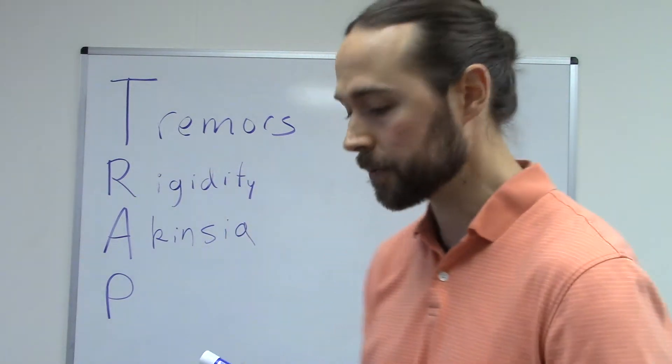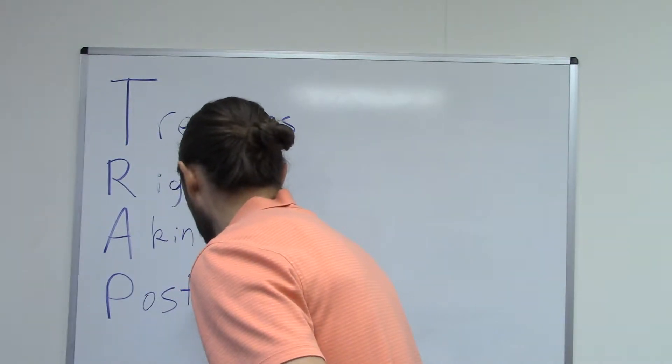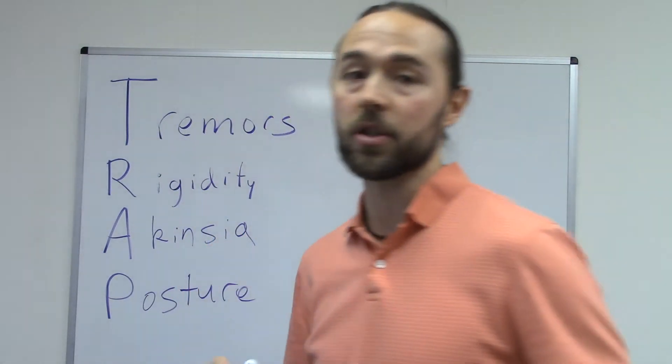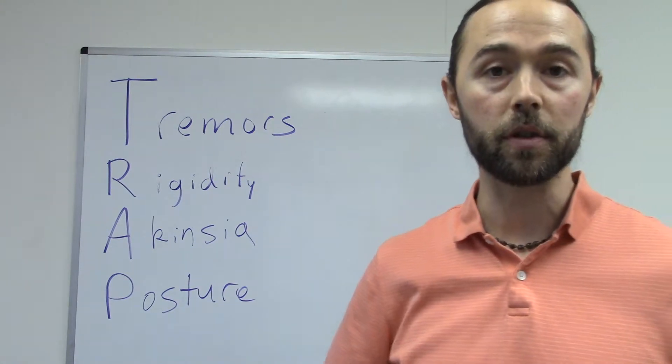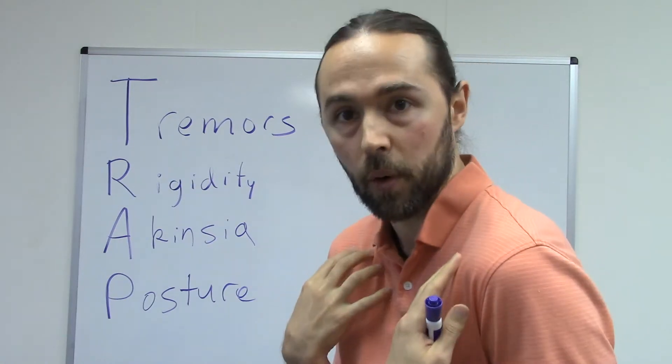And then P is for posture. So like I just mentioned, the most common thing you're going to see with the posture of someone with Parkinson's is that it tends to go forward. So the shoulders come forward, the back comes forward,